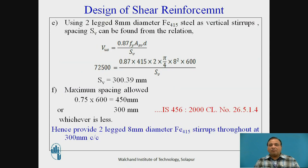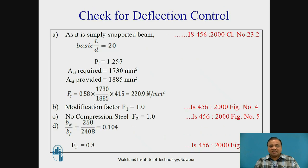Now using 2-legged 8 mm diameter Fe415 steel vertical stirrups, spacing of stirrup is given by Vus = 0.87 × fy × Sv × d / Sv. Sv works out to be 300.39 mm, but maximum spacing as per IS is 0.75d or 300 mm, whichever is less. Therefore provide 2-legged 8 mm stirrups at 300 mm center to center. Then check for deflection.